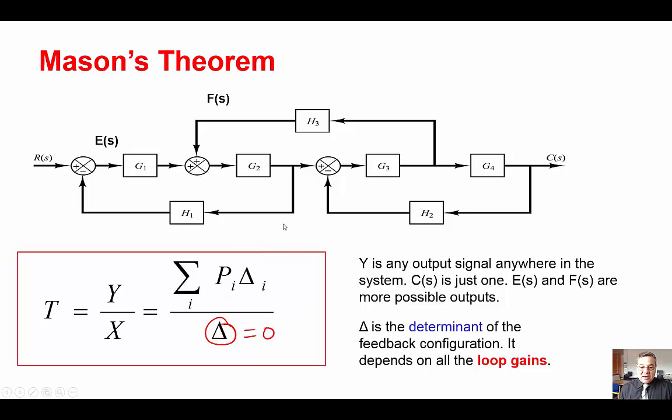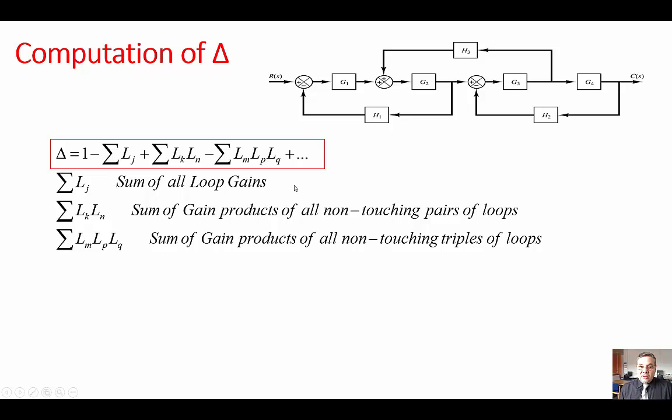So as an example we will use this block diagram. The formula looks complex but it's not really that complex when we start to apply it. For example, the first part here, delta is 1 minus sigma Li, that's the sum of all loop gains. How many loops do we have? We have one loop here, loop number 2, loop number 3. And the loop gain, you go around the loop, multiply the gain and take into account if there is a minus sign like here for example.